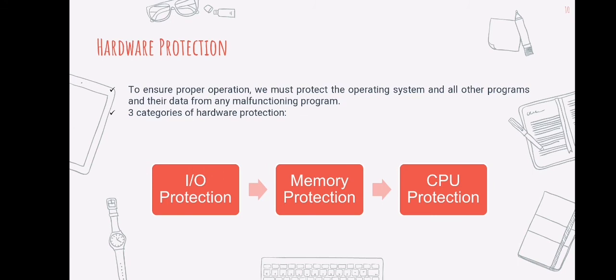IO protection means preventing unauthorized input-output instructions. Accessing memory locations within the operating system or refusing to surrender the CPU — a user software can interrupt the system's normal operation. We may utilize a variety of techniques to ensure that such systemic disruptions do not occur.